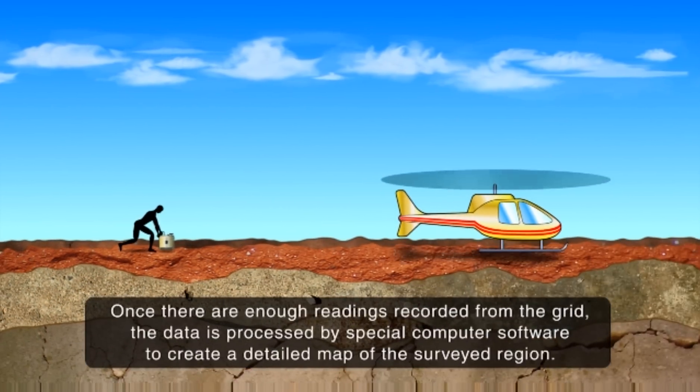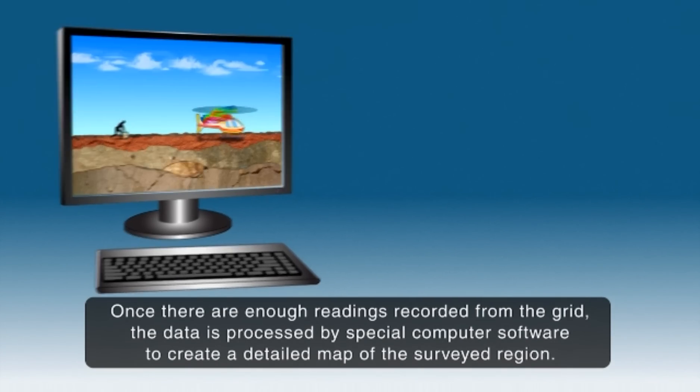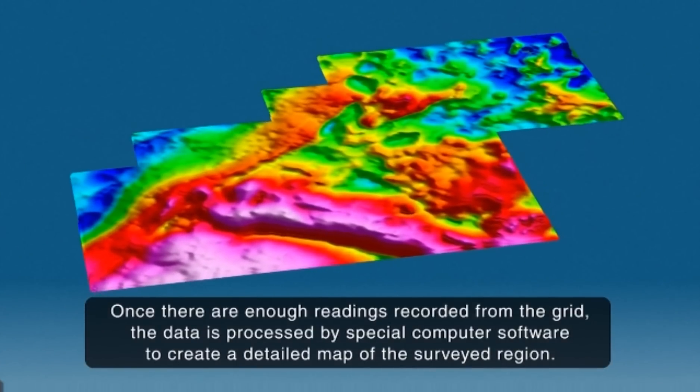Once there are enough readings recorded from the grid, the data is processed by special computer software to create a detailed map of the surveyed region.